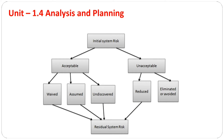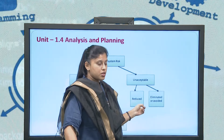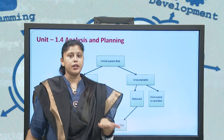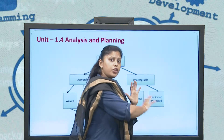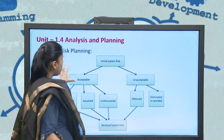Looking at the risk planning diagram: there is an initial system risk — certain risk is acceptable and certain risk is unacceptable. Acceptable risks can be eliminated easily, assumed based on prior projects, or remain undiscovered as unknown factors. Unacceptable risks are those not accepted at all for your software; such risks have to be reduced, eliminated, or definitely avoided. Once you reduce and avoid those risks, you get the residual system risk. This is a simple cycle of software risk planning.